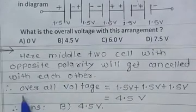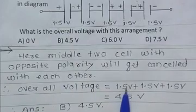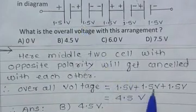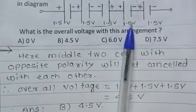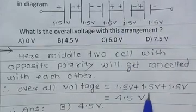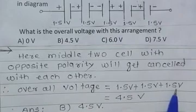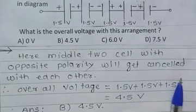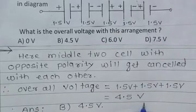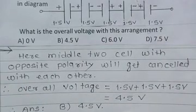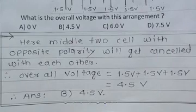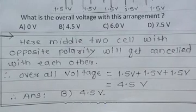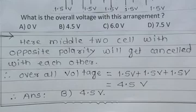Overall voltage is 1.5 volt plus 1.5 volt plus 1.5 volt. The middle two are cancelled due to opposite polarity. So we have 1.5, 1.5 and 1.5 volt. The addition gives overall voltage of 4.5 volt. Thank you.